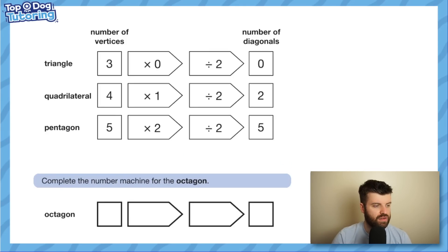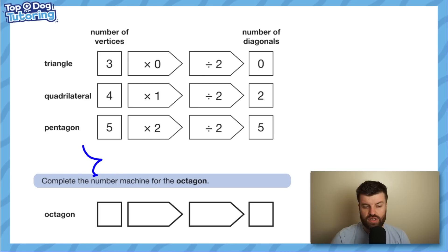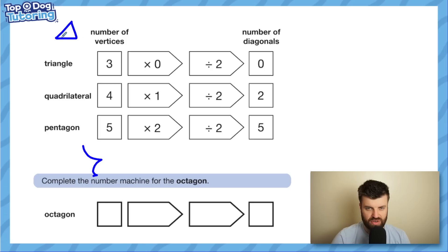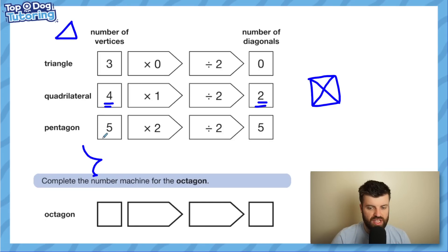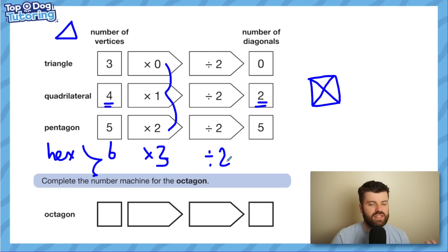How about this one? Have a go — there's a way where we keep writing and get there, or we can spot a pattern. Can you spot the pattern? What we have is a number machine for different shapes. For a triangle, vertices is 3 and diagonals is 0, because joining up the vertices would just be the edges of the shape. For a quadrilateral, 4 vertices and 2 diagonals, because we can draw 1, 2 diagonals. The trap is thinking after pentagon comes hexagon: 6 vertices — times 2? No, that's a trap. Look at the pattern: times 0, times 1, times 2, times 3, then divide by 2. So 6 times 3 is 18, divided by 2 is 9 — 9 diagonals in a hexagon.